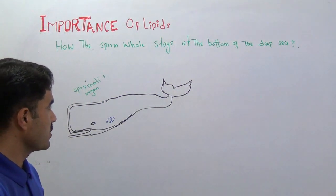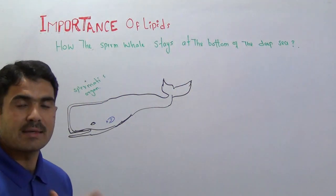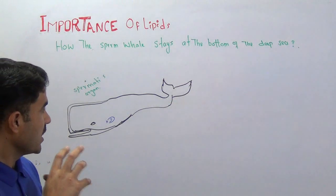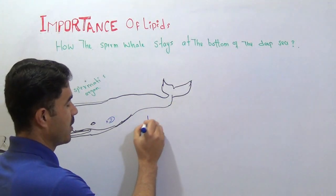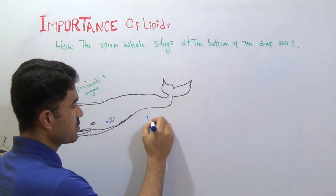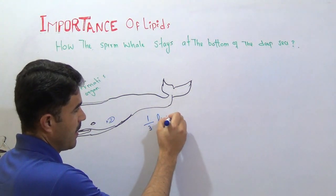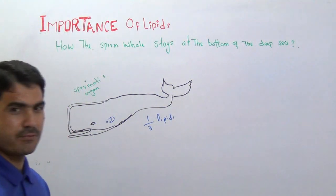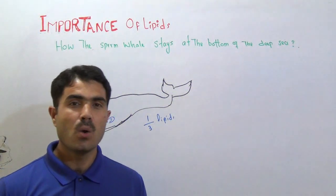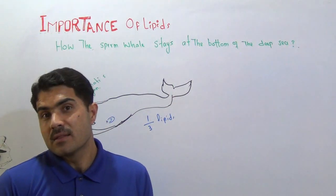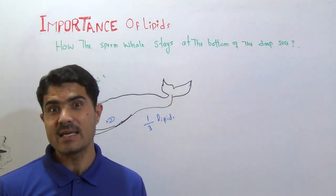There is some very speciality about this whale is that its body's one third, one third of its body consists of lipids. It means if the whale is three kg, one kg is the lipids.